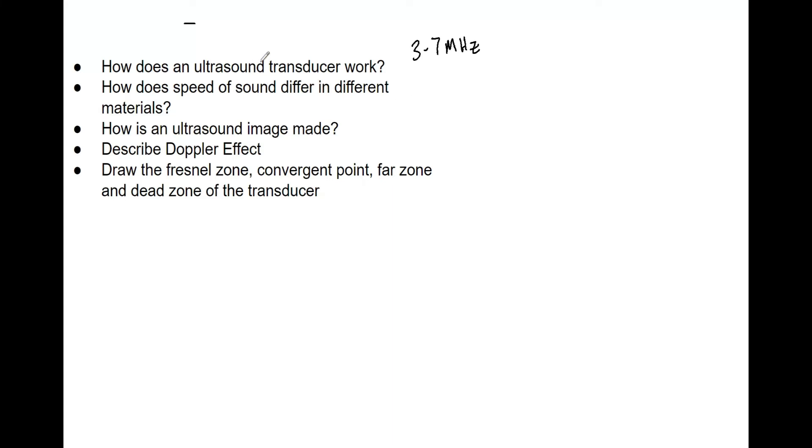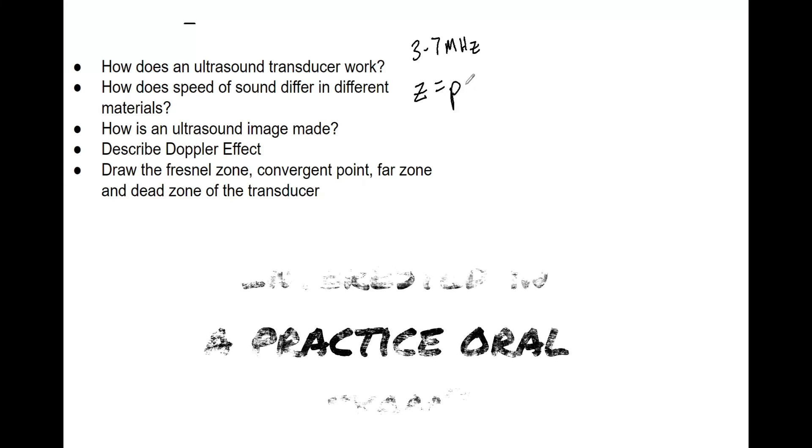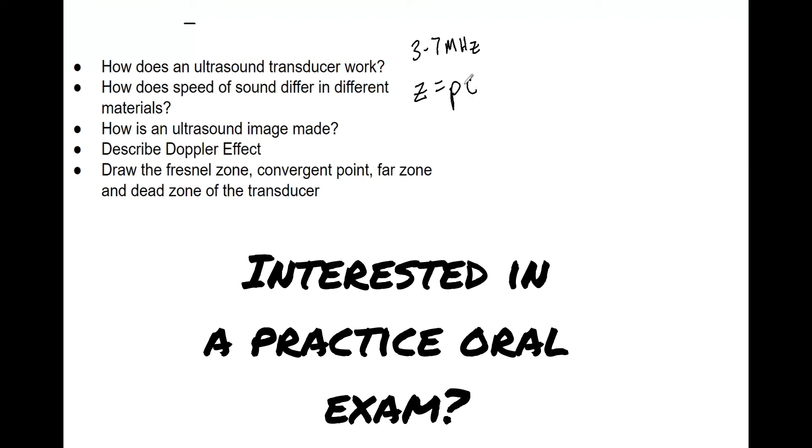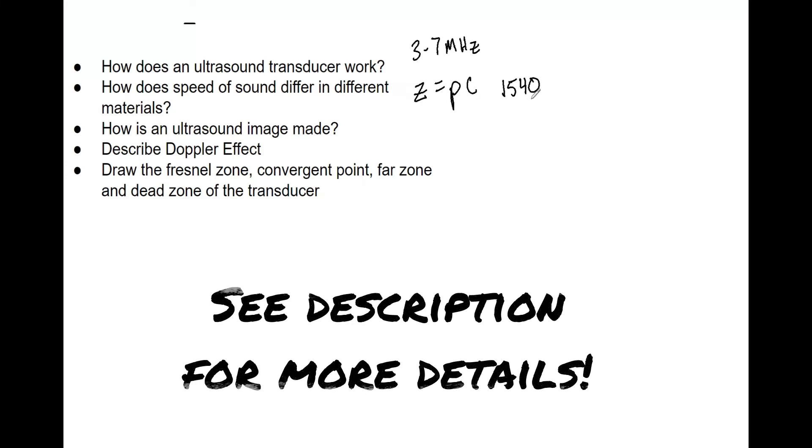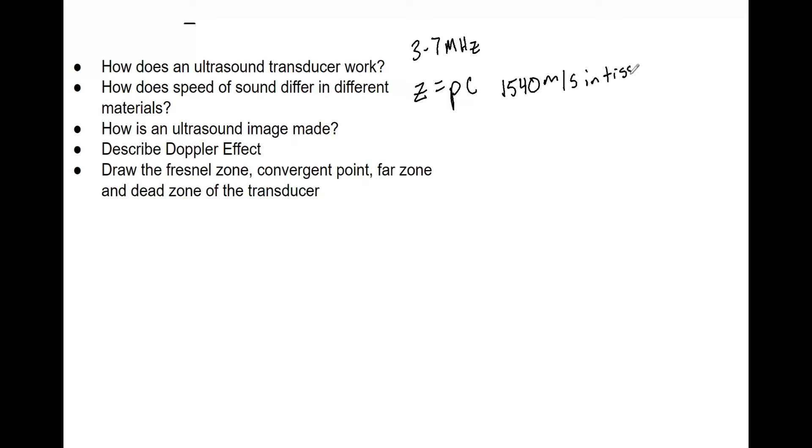The speed of sound differs in various materials based on acoustic impedance, given by Z. The equation for acoustic impedance is ρ times c, where ρ is the density and c is the speed of sound in the medium. In tissue, it's good to memorize that it's 1540 meters per second. Remember that reflection and transmission equal one. If the acoustic impedances are too different between materials, you'll get total reflection.